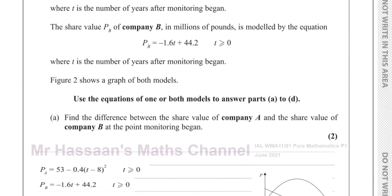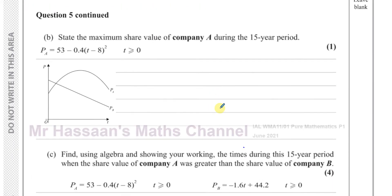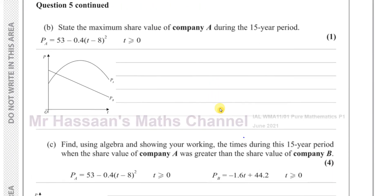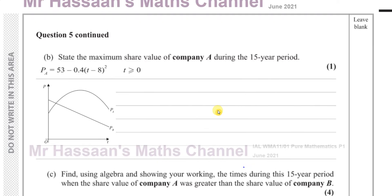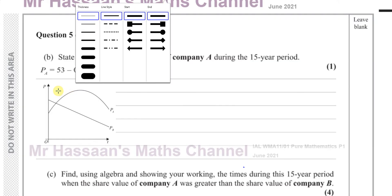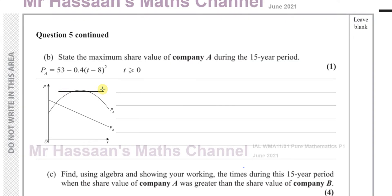Part B says: state the maximum share value of Company A during the 15-year period. The maximum share value of A is at the vertex — the highest point of this parabola shape. We need to find the maximum value of PA for Company A.